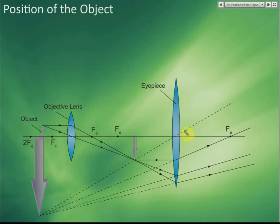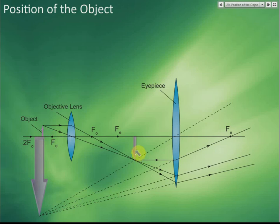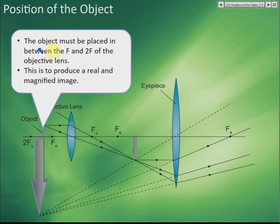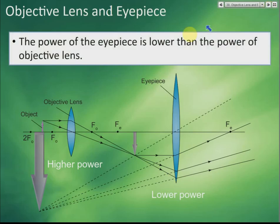This image is used as the object for the second lens, the eyepiece. For the microscope, we try to get as large an image as possible, so we place the object between f and 2f. If you place the object between f and 2f, you get a magnified image. It must be a real image, because if it's not real, the second lens cannot use it as an object. So the object must be placed between f and 2f of the objective lens to produce a real and magnified image.